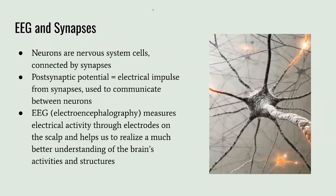Neurons are nervous system cells connected by synapses. Post-synaptic potential equals electrical impulse from synapses used to communicate between neurons. EEG measures electrical activity through electrodes on the scalp and helps us realize a much better understanding of the brain's activities and structures.